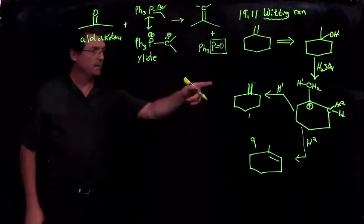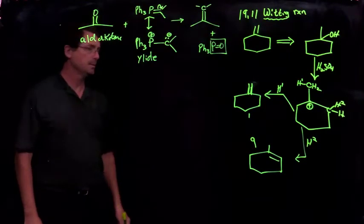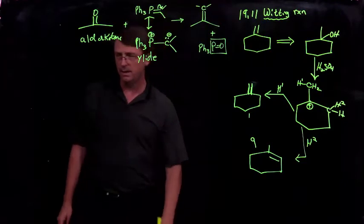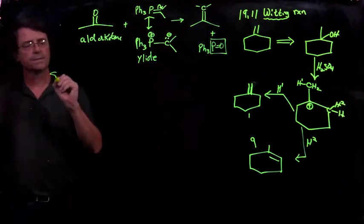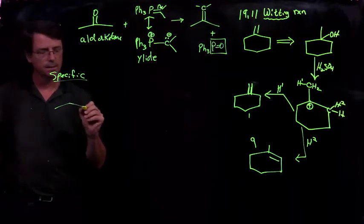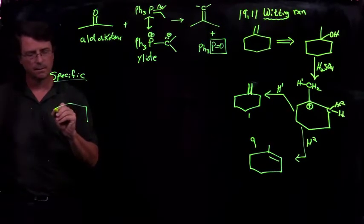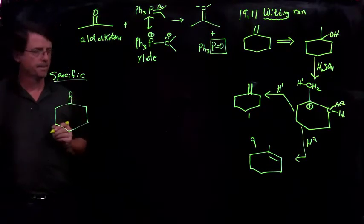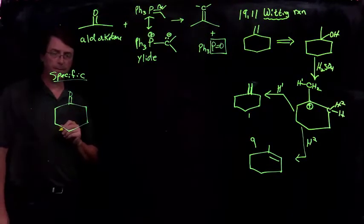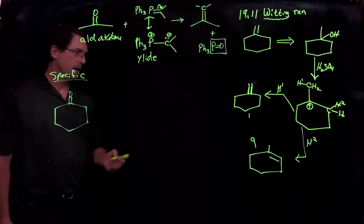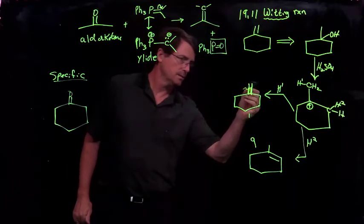Alright. So let's look now at our problem that we have. We want a high yield of this specific alkene. So for our specific example here, let's take the carbonyl compound that we would need, which would be this ketone.